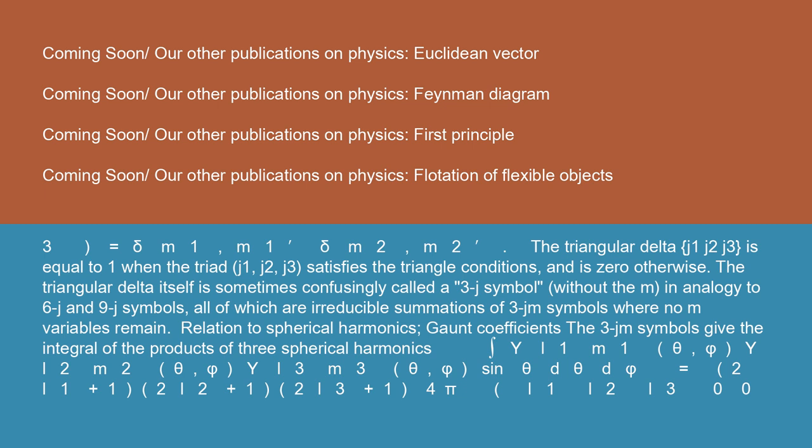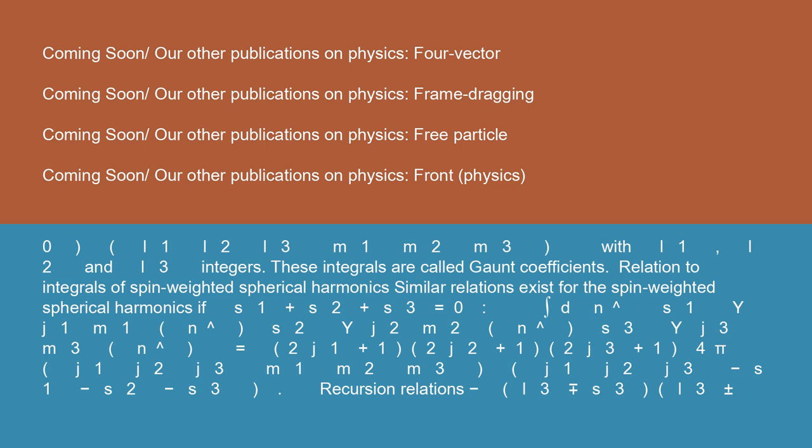Relation to spherical harmonics: Gaunt coefficients. The 3JM symbols give the integral of the products of three spherical harmonics: ∫ Y_{L1,M1}(θ,φ) Y_{L2,M2}(θ,φ) Y_{L3,M3}(θ,φ) sin(θ) dθ dφ = √[(2L1+1)(2L2+1)(2L3+1)/(4π)] * (L1 L2 L3; 0 0 0) * (L1 L2 L3; M1 M2 M3), with L1, L2, and L3 integers. These integrals are called Gaunt coefficients.